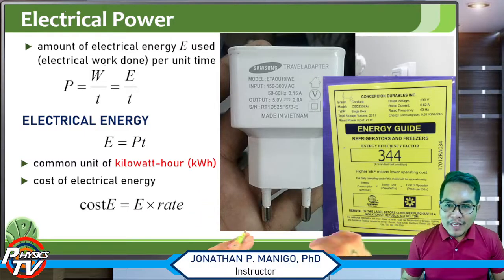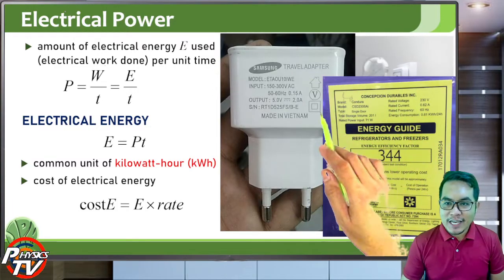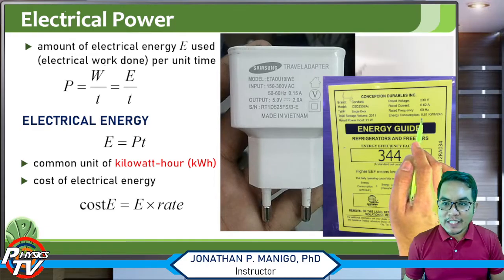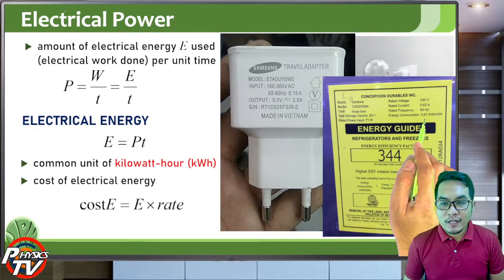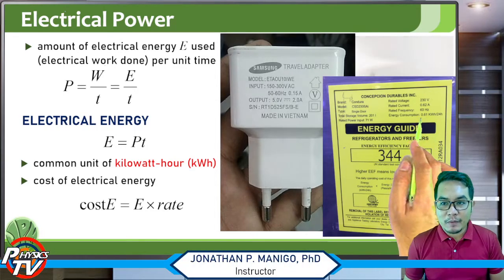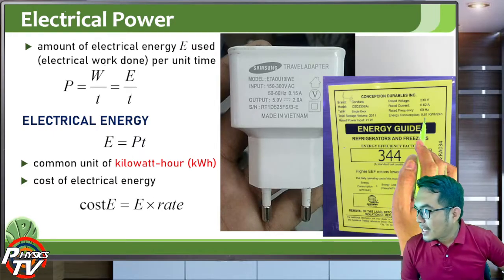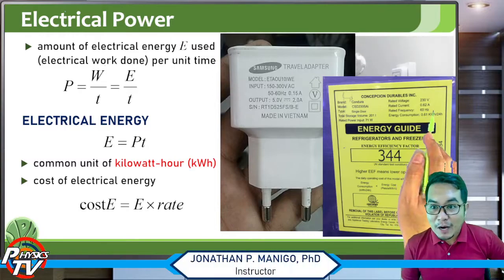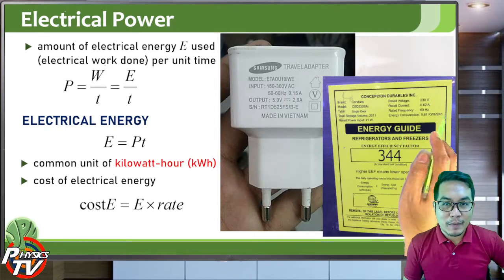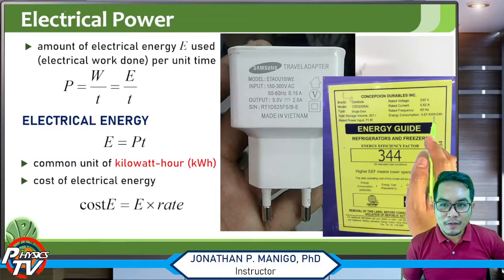When buying refrigerators or freezers, they usually have an energy guide that tells you the rated power input and the energy consumption per day — per 24 hours. For example, this one shows 0.61 kilowatt-hours per 24 hours. If you cancel the hours, you get kilowatts, so this figure is essentially the average power of your freezer or air conditioner.